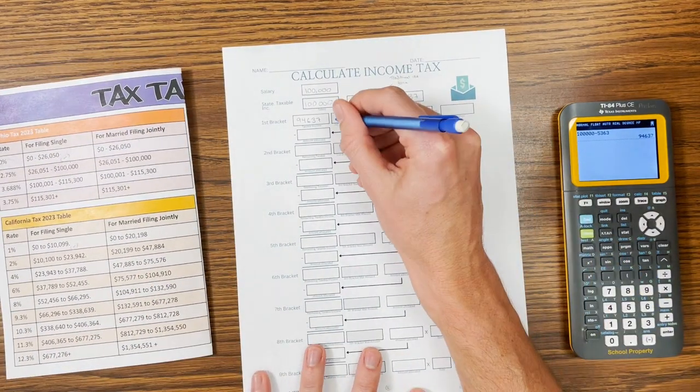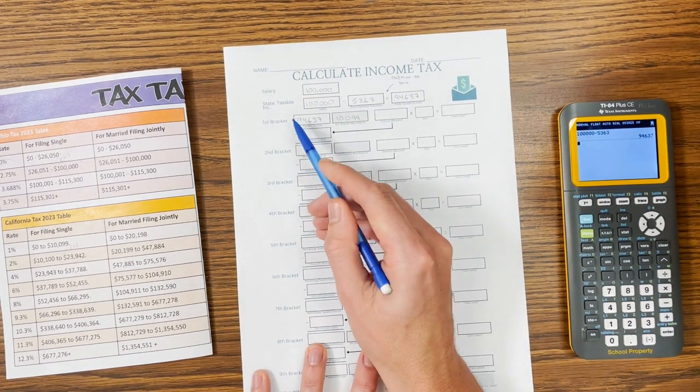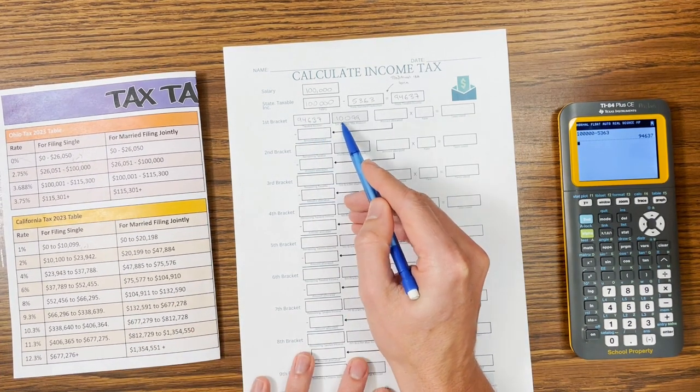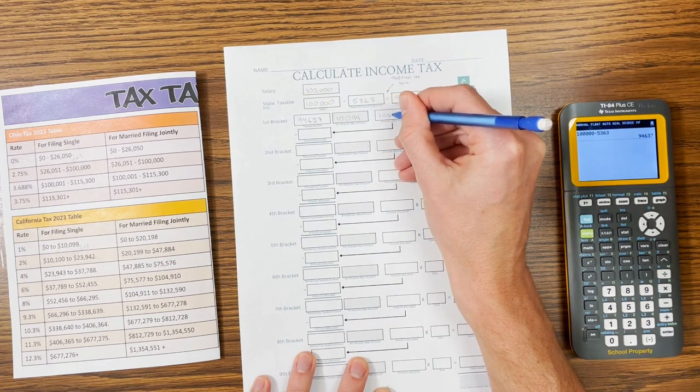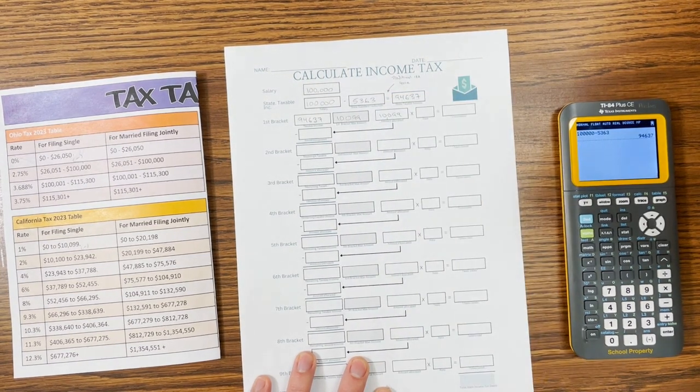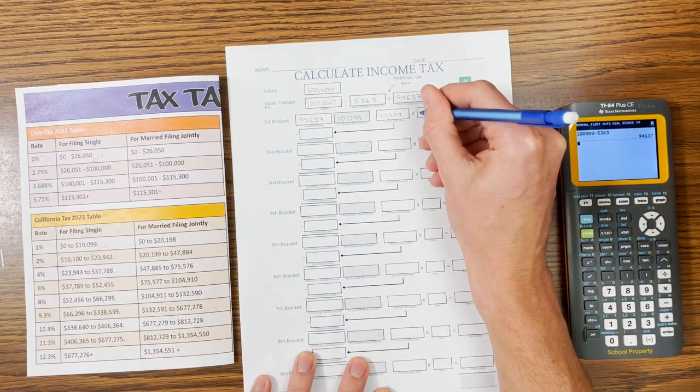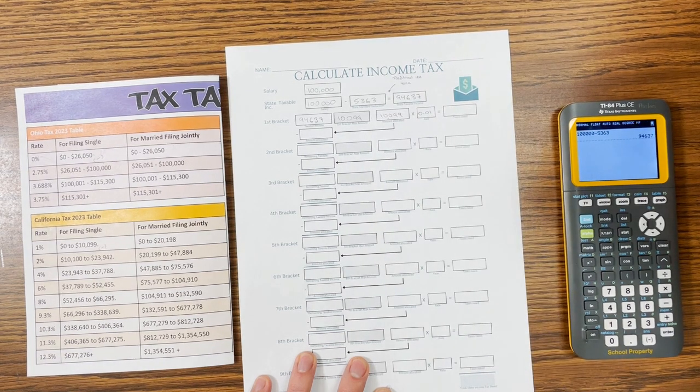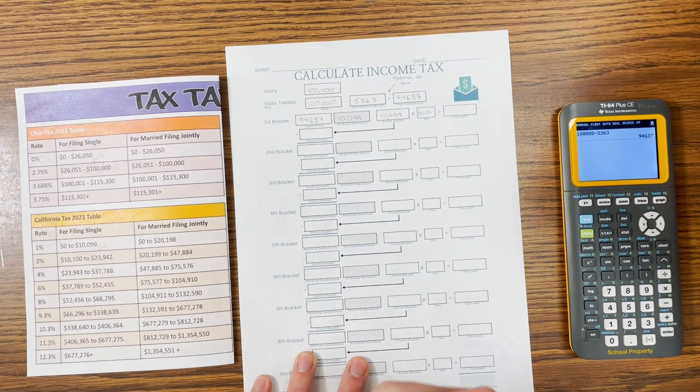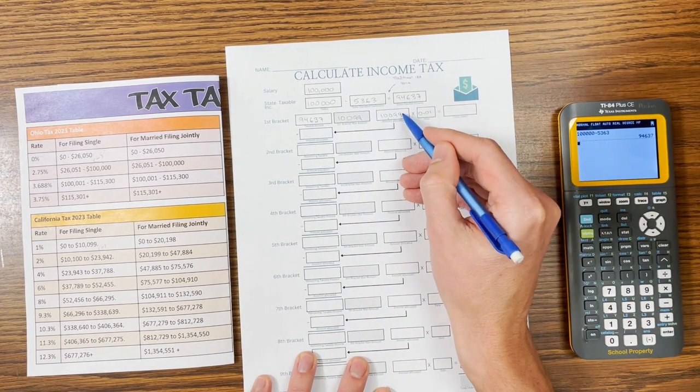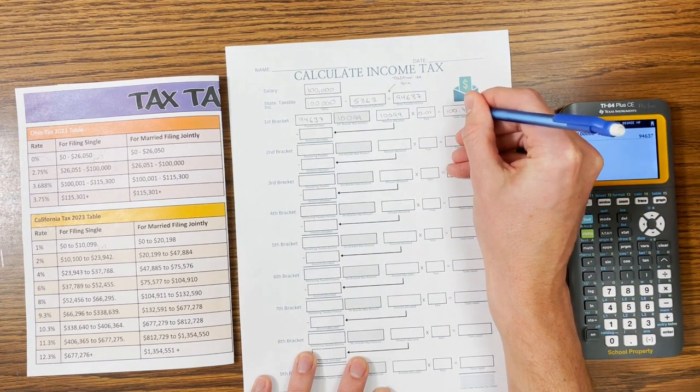So our first one is an easy one, $10,099. Since our taxable income is higher than this, we're going to fill it up completely. We're going to max out this bracket. So $10,099 going in. The rate is 1%. So to convert a percentage to a decimal, you divide by 100, 0.01. And then we multiply the two of those to see how much we owe. Now if you're doing 1% of something, you're just doing two decimal places in, so it's going to be $100.99.